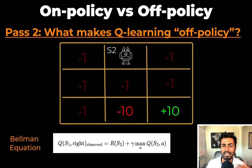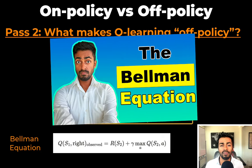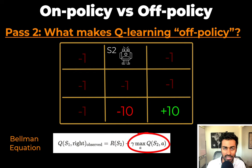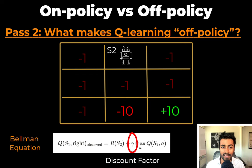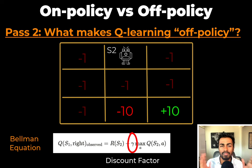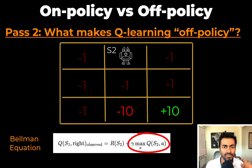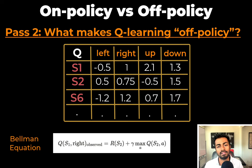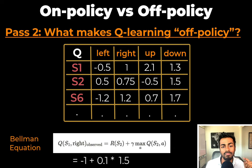The Bellman equation defines a recursive relationship between Q-values. The total reward observed is the reward received transitioning into state S2, plus the maximum possible reward that we can receive when being in state S2. Gamma is a discount factor that describes how much importance we give to future rewards as opposed to immediate rewards — it's a number between 0 and 1. To determine this second term, we look at the maximum Q-value from state S2. From the table, the largest value is taking S2 down — that's 1.5. So the observed value is negative 1 plus, with discount factor 0.1, times 1.5, giving us negative 0.85.